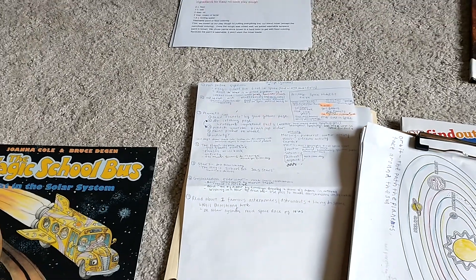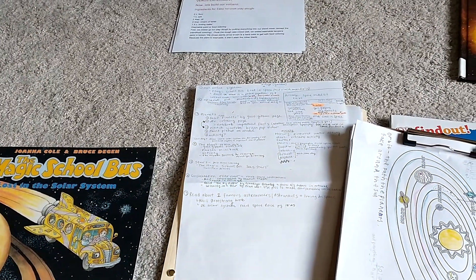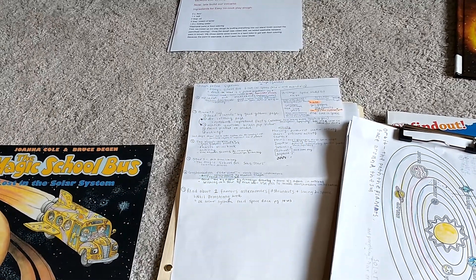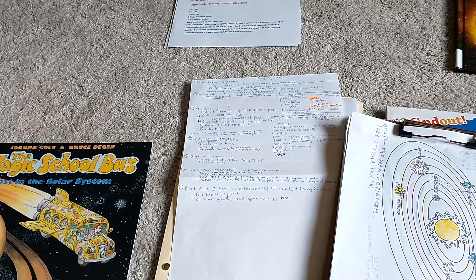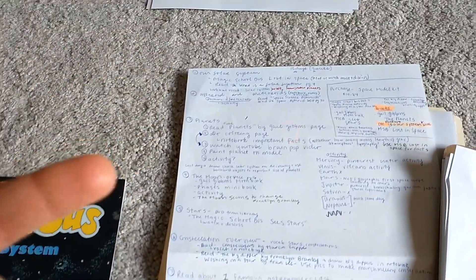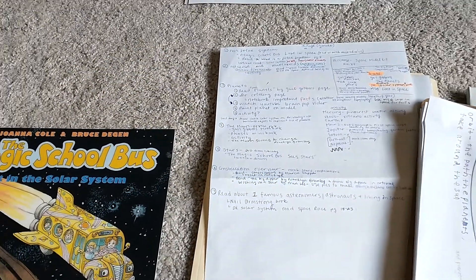So just to review, what I usually do is I look at several curriculums and look at their table of contents and see what I think is most important for the girls to know at this age. I write down those topics. So for here it was asteroid belt, planets, moon, stars, constellation, and then astronomers or astronauts.